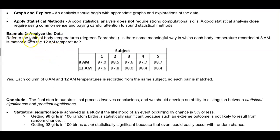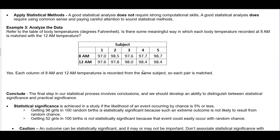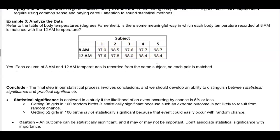Let's take a look at example three, analyzing the data. We're going to refer to the table below of body temperatures, which are in degrees Fahrenheit. Is there some meaningful way in which each body temperature recorded at 8 a.m. is matched with a 12 a.m. temperature? Here are five subjects. 8 a.m., there are the temperatures at 8 a.m., and there are the temperatures at 12 a.m. There is a meaningful connection in this case because each column of 8 a.m. and 12 a.m. temperatures is recorded from the same subject. So each pair is matched. Subject one had a temperature measured at 8 a.m. and then again at 12 a.m., and so on with each subject.